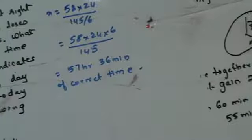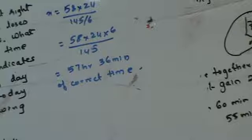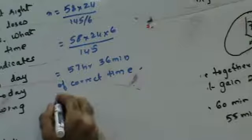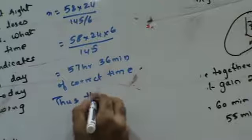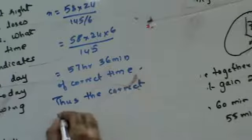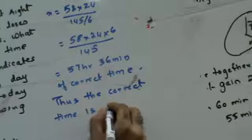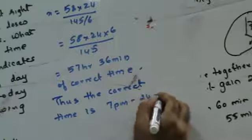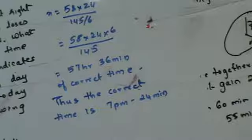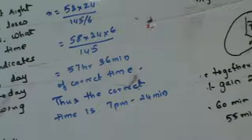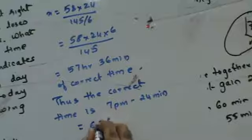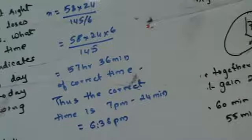The watch showed 58 hours but the correct time is 57 hours 36 minutes — the watch is fast by 24 minutes. So reduce 24 minutes from the indicated time of 7pm: 7pm minus 24 minutes gives 6:36pm. The correct time is 6:36pm.